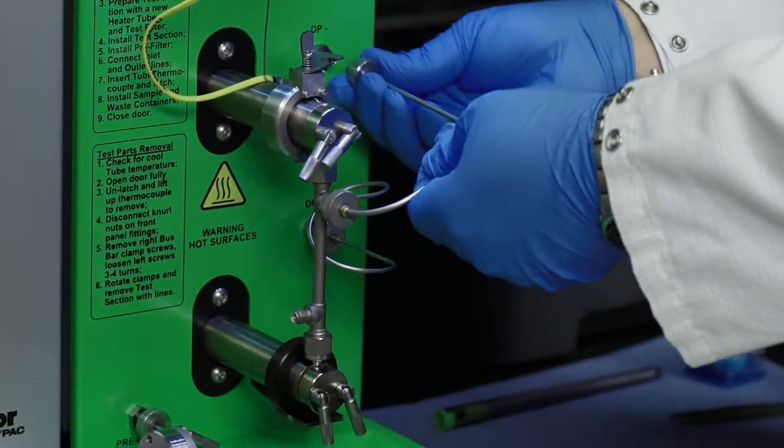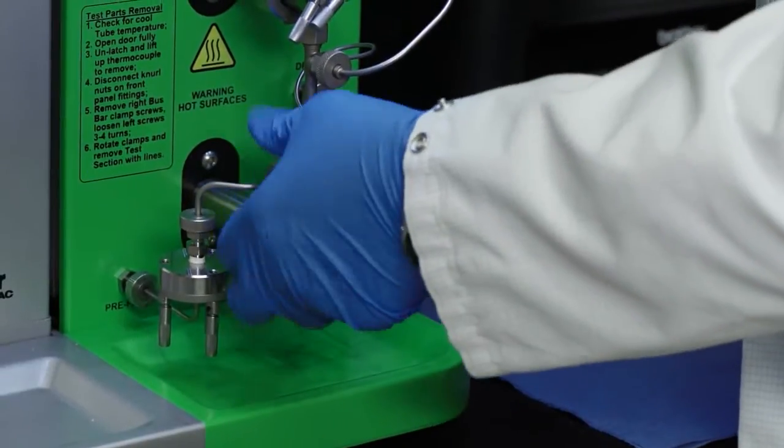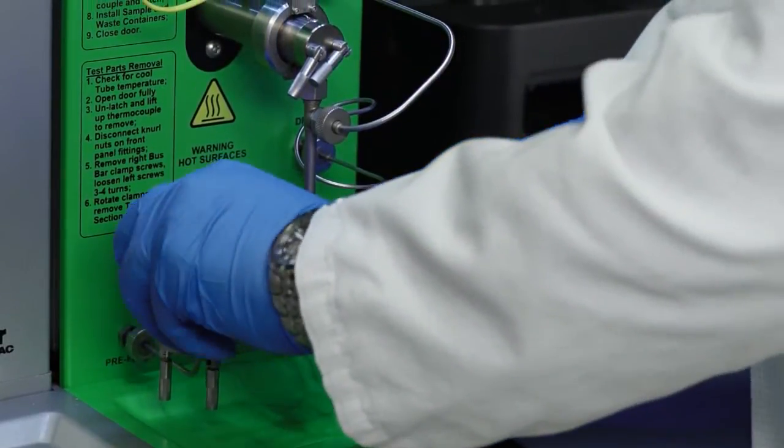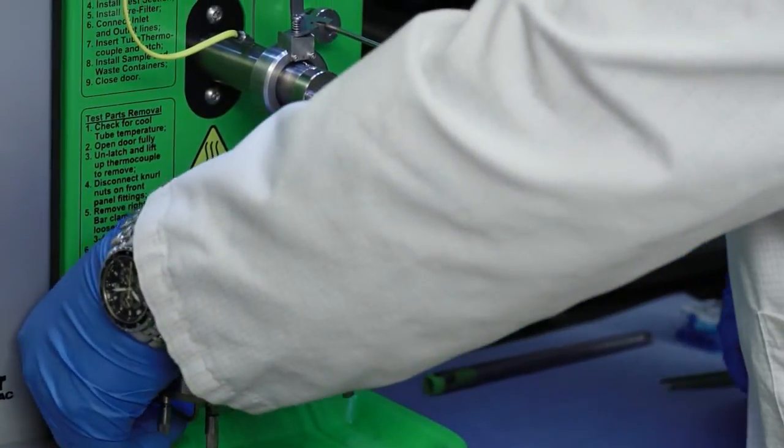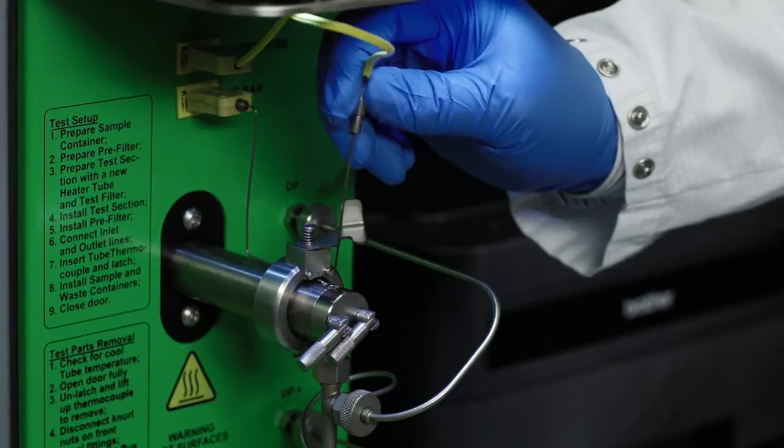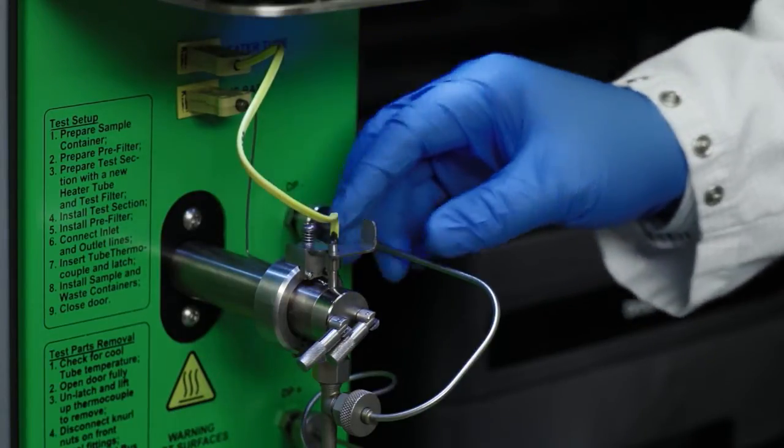Now install the prefilter assembly. Then, install the inlet line between the prefilter assembly and the test section, and connect the test section outlet lines. Insert the heater tube thermocouple completely into the hole in the top of the heater tube, and slide the holder over to hold the thermocouple in place.